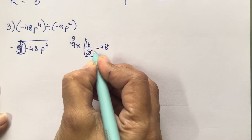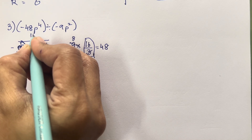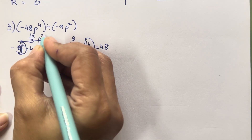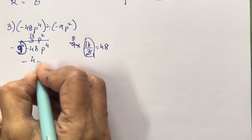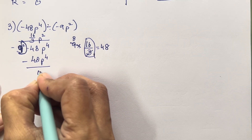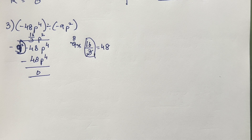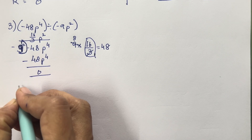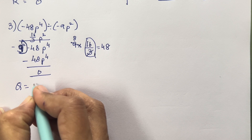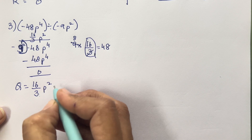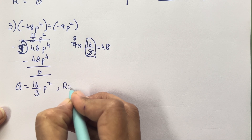So the numbers we have to take are 16 upon 3p. 2 is over here, so 2 plus 2 will give you 4, which gives you minus 48p⁴ and remainder 0. It is a bit tricky, but it is very easy — trust me. If you practice it, it is going to be very easy. Just remember the steps. The quotient is 16/3 p², and the remainder is 0.